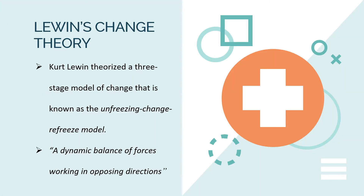Lewin's most influential theory was his model of the change process in human systems. Kurt Lewin theorized a three-stage model of change known as the unfreezing, change, and refreeze model, which requires prior learning to be rejected and replaced. Lewin's theory states behavior as a dynamic balance of forces working in opposing directions.